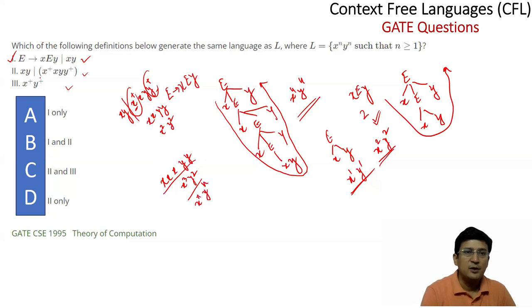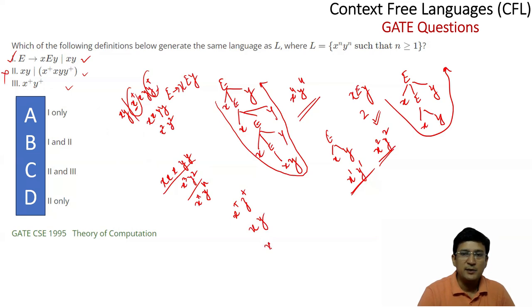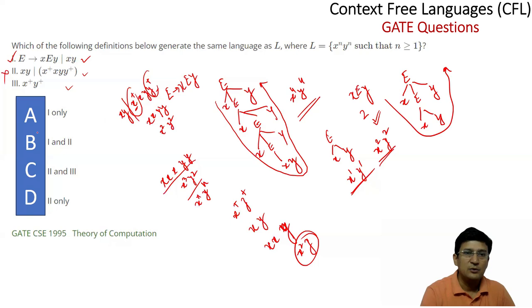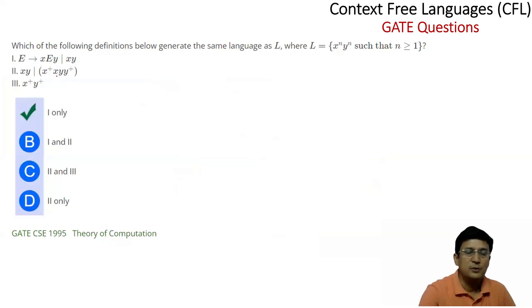Similarly, x+ and y+ with concatenation like xy(x+)(y+) can also produce unequal counts — for example x^2 y or x^3 y^2 — which do not satisfy x^n y^n. So option 3 is also incorrect. The only correct option is option 1 — only the grammar generates exactly the language x^n y^n where n ≥ 1. This was the GATE 1995 question.